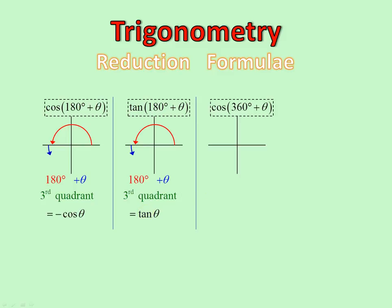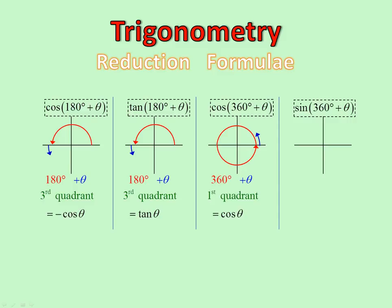Cos of 360 plus theta: there's 360, if we add a bit, it's actually back into the first quadrant. And cos of the first quadrant, like all other trig ratios, is positive. So it's just cos theta. Sine of 360 plus theta: 360 plus theta is also in the first quadrant, and sin is always positive as well.